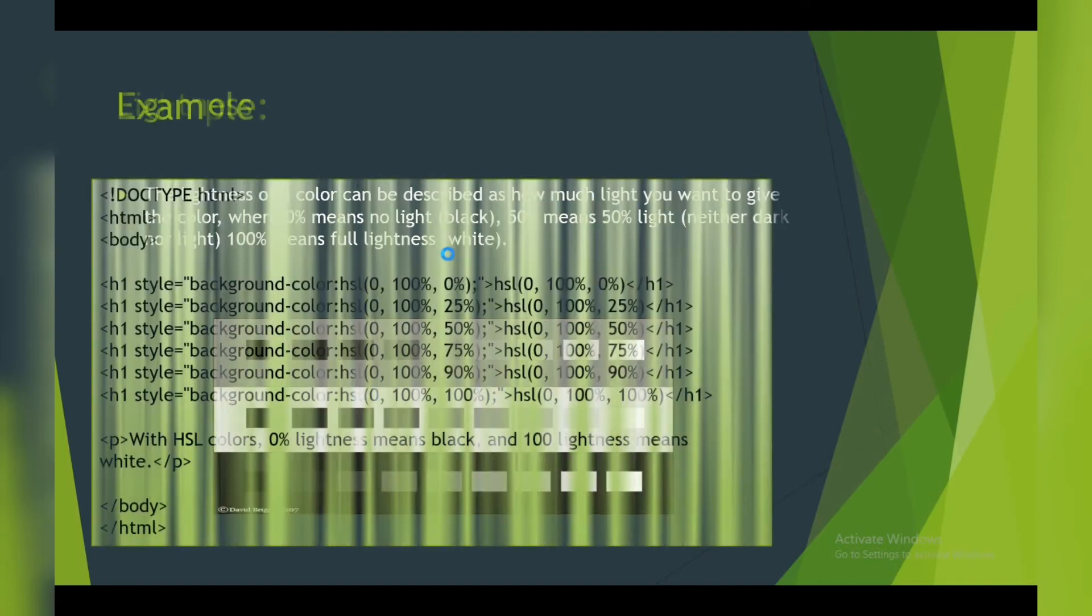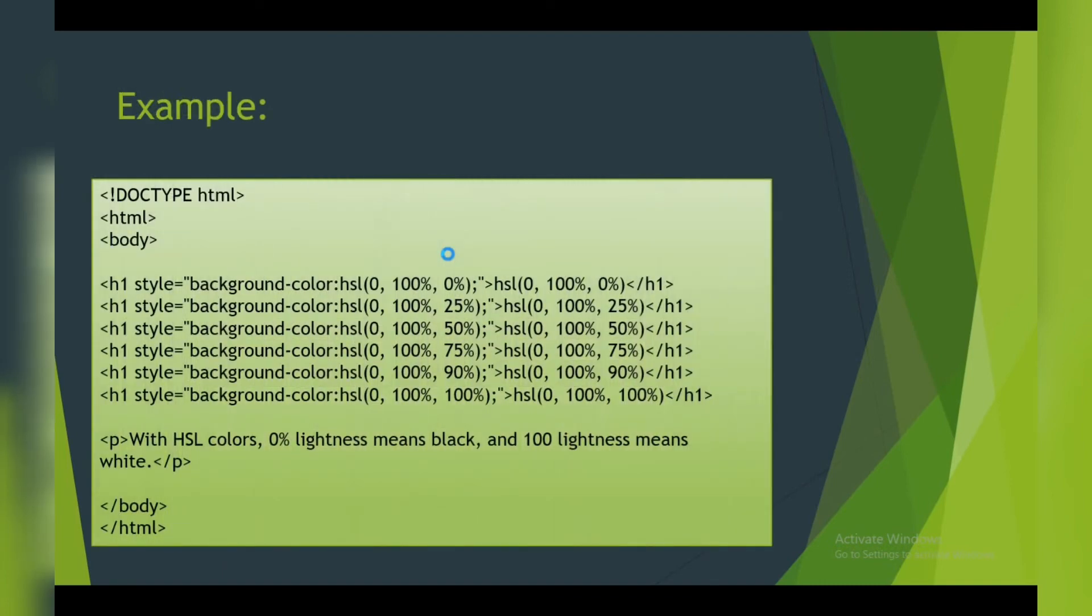In this example, hue is adjusted to zero degrees, saturation is adjusted to 100 percent, meaning complete color, and only lightness percentage is changed. You can pause and try by yourself, or wait for my notepad explanation. It will be very easy.